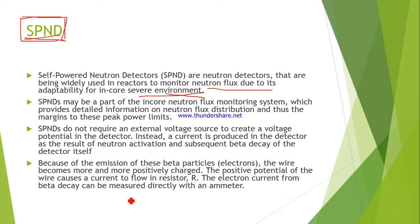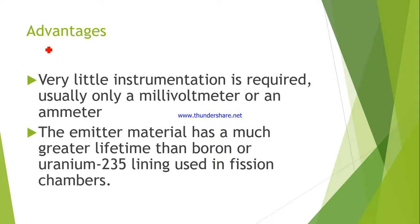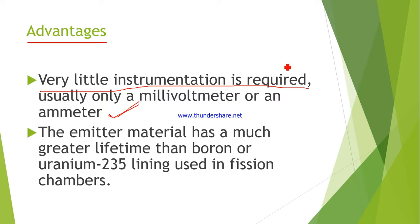Since no external voltage source is needed, this is called a passive device. The electrode itself — the emitter — emits beta particles, which are electrons. The electrons flow through the external circuit and can be easily measured by a conventional current measuring device without complicated electronics. Very little instrumentation is required; usually only a millivoltmeter or an ammeter is sufficient to measure the current, which is then mapped to the desired physical quantity.